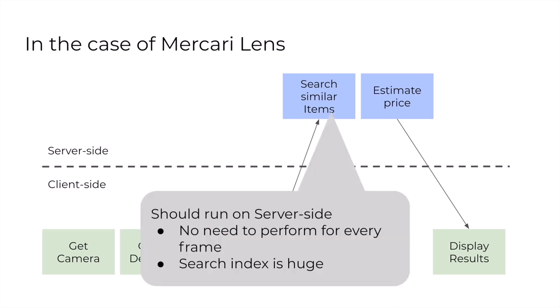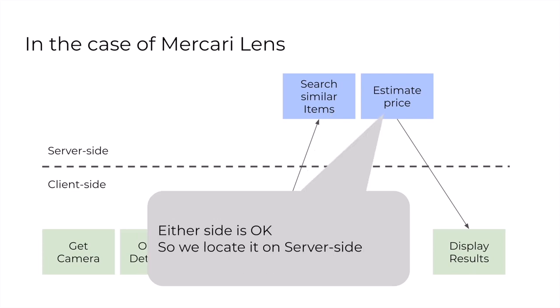For the step of searching similar items, it should run on the server-side. This step does not need to be performed for every frame — it is enough to be called only once when a new object is detected. And as the variation of items sold in Mercari is unlimited, the search index becomes huge to achieve higher search accuracy. The huge search index can't be stored on user devices. For the price estimation step, it is only called after the search step and the computation cost is low, so either side is acceptable. We located it on the server-side.